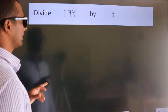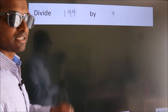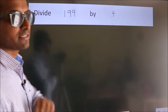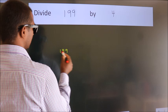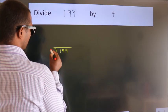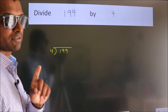Divide 199 by 4. To do this division, we should frame it in this way. 199 here, 4 here. This is your step 1.